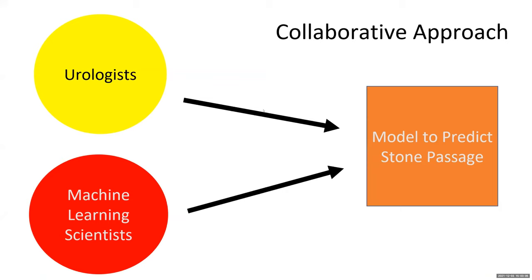Collaboration between urologists and machine learning scientists is critical to our work. This schematic illustrates what many people — including myself — think of when they first hear about collaboration in urologic research, especially when working with people who are more science-heavy and those who are more clinical-heavy. That's the urologist and the machine learning experts each working on their own portions in parallel to create a model.